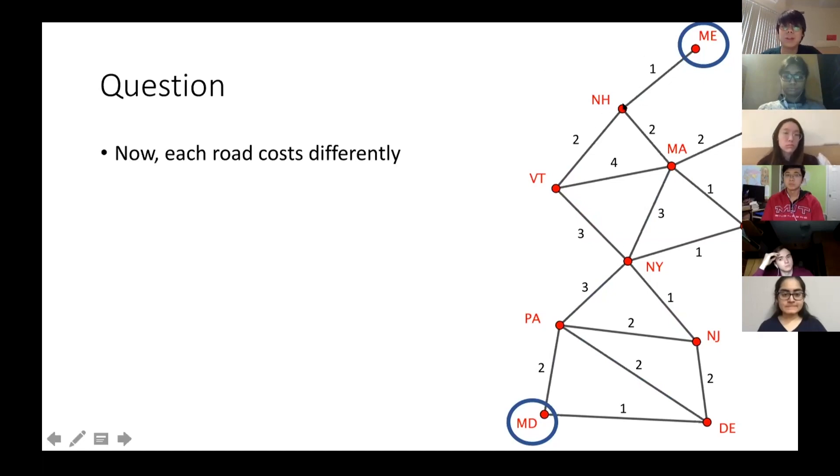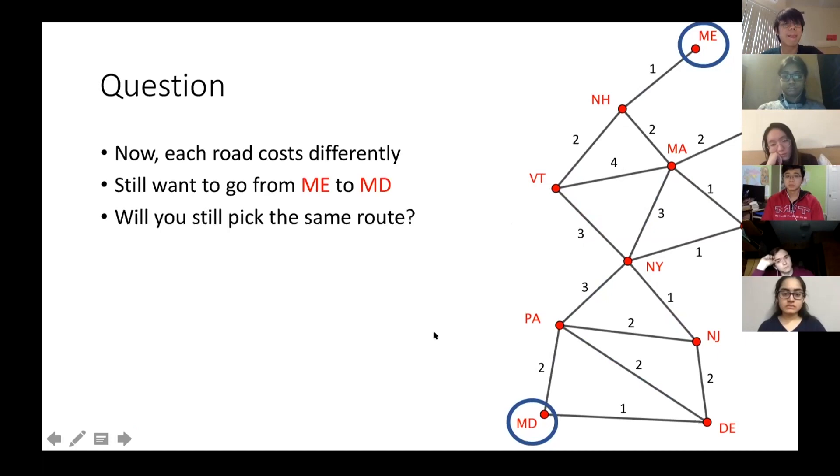Basically the numbers above the edge will tell you the amount of money you need to pay for using the road. You still want to go from Maine to Maryland, but you still pick the same route. I'll tell you here that the old one will cost you $11, like one, two, three, three, and two. Can we do better?